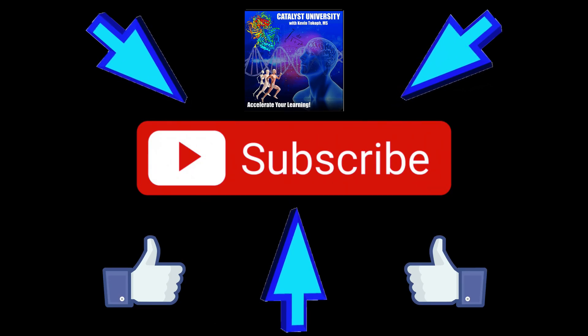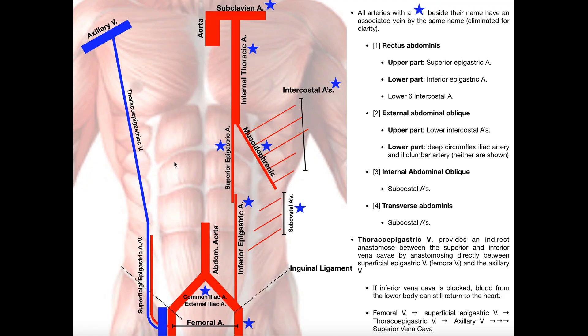Welcome back to Anatomy & Physiology on Catalyst University. My name is Kevin Tokov. Please make sure to like this video and subscribe to my channel for future videos and notifications. In this video, we're going to cover the very basics of blood supply to the anterior abdominal wall. I'm not going to be able to mention every single little artery and vein here, but this should give you a good framework so if you had to go learn slightly more detail, you can go and do so.